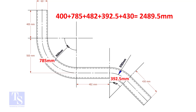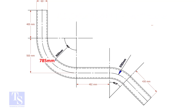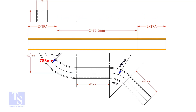Add these lengths. The total length of the pipe is 2489.5 millimeters. An important thing to remember: you may need to add extra length at both ends of the pipe. This extra length depends on the bending process. Thank you for watching.